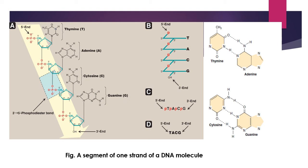This is the structure of a whole nucleotide. As mentioned in the previous lecture, this part is the nitrogenous base, this is the ribose sugar, and this is the phosphate group. In a single strand of DNA, the 3-prime position of one nucleotide and the 5-prime position of the next nucleotide are both attached via a phosphate group, forming a phosphodiester linkage.